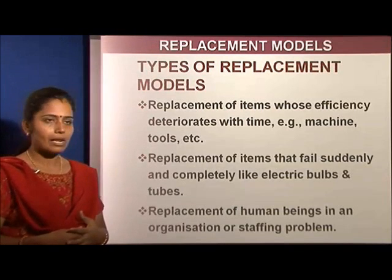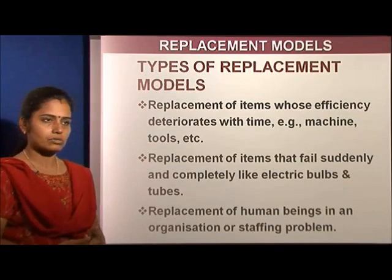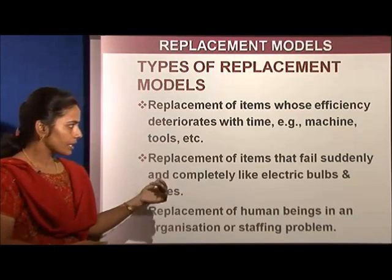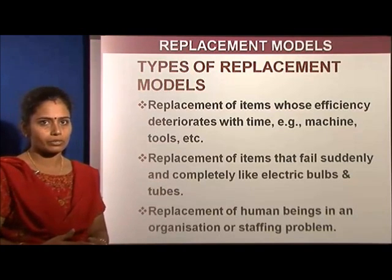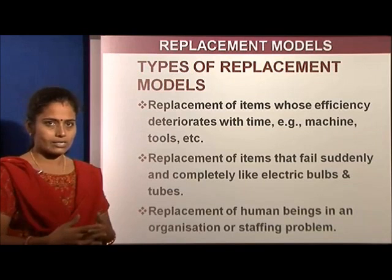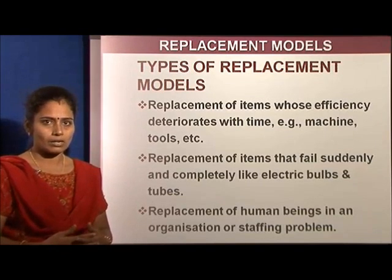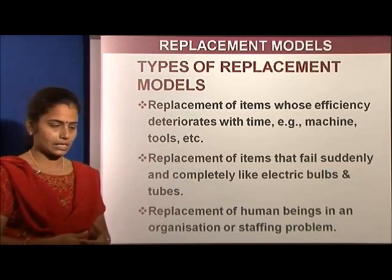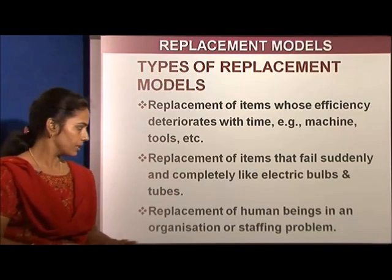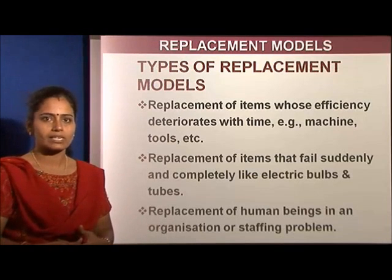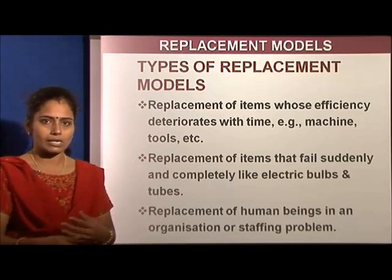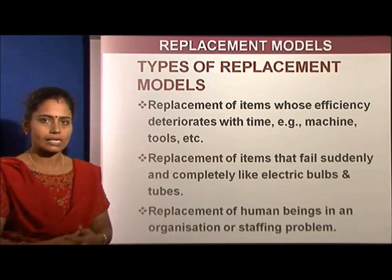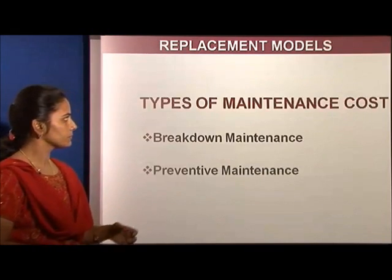What are the types of replacement models? The first type: machines or tools whose efficiency gets reduced over time due to wear and tear — that is one separate model. The second type: items like computers, electric bulbs, or electronic devices that suddenly stop working one fine day without any prior notice — how do we replace such things? The third type: human beings, where attrition occurs in organizations.